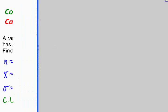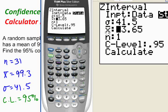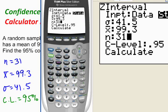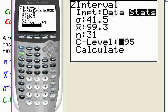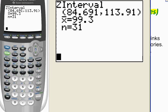My standard deviation is 41.5. My sample mean is 99.3. My sample size is 31. And my confidence level is 95% or .95. You always want to write it as a decimal. Now I just go down to calculate, and I hit enter. And huzzah! There it is.